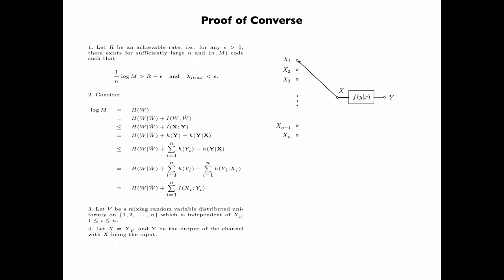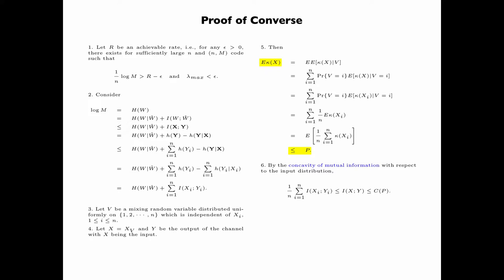Now recall the picture illustrating the random variable X. By the concavity of mutual information with respect to the input distribution, 1/n times the summation over i of the mutual information between X_i and Y_i is upper bounded by the mutual information between X and Y. We have proved that the expectation of kappa(X) is less than or equal to P, and so by the definition of C(P), I(X;Y) is less than or equal to C(P). Thus, 1/n times the summation over i of the mutual information between X_i and Y_i is less than or equal to C(P), which implies that the summation over i of I(X_i; Y_i) is less than or equal to n times C(P).